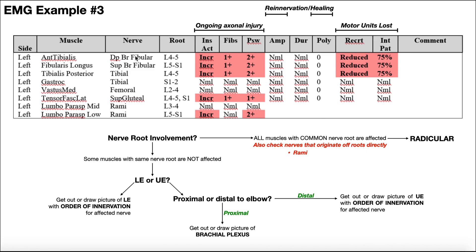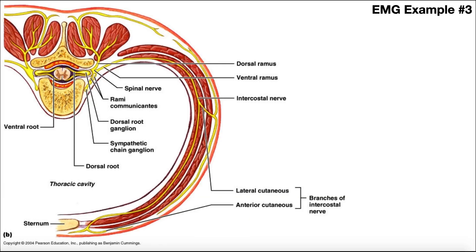Most of these nerves do not originate off of the roots directly — we've got all the lumbar plexus, the sacral plexus, the blending, all that stuff, and most of these are really just the terminal nerve branches. But there are a couple down here: the rami. Rami are really close to the nerve root levels. We did talk about this in a previous video, but let's review this.